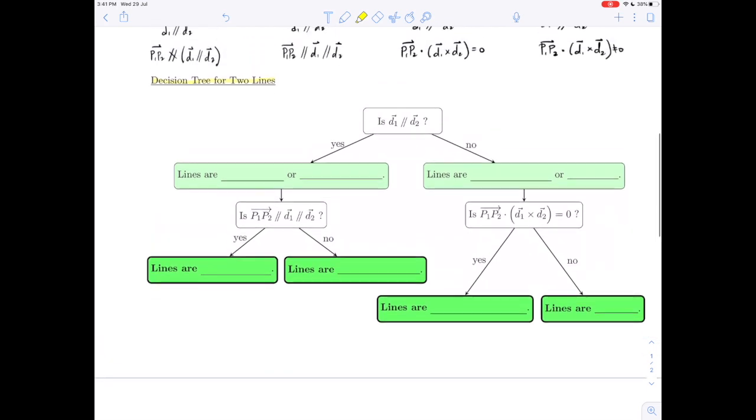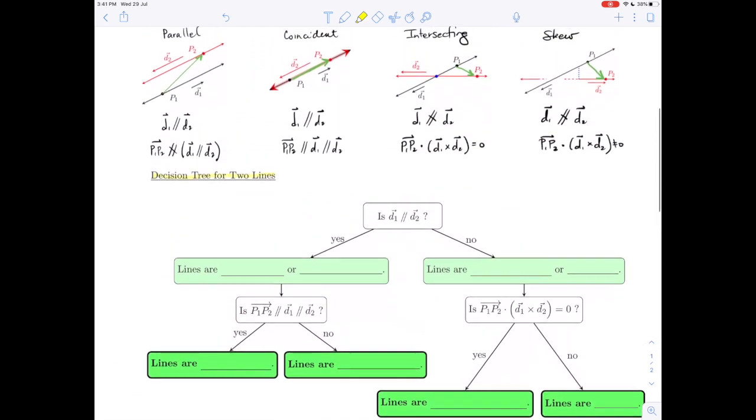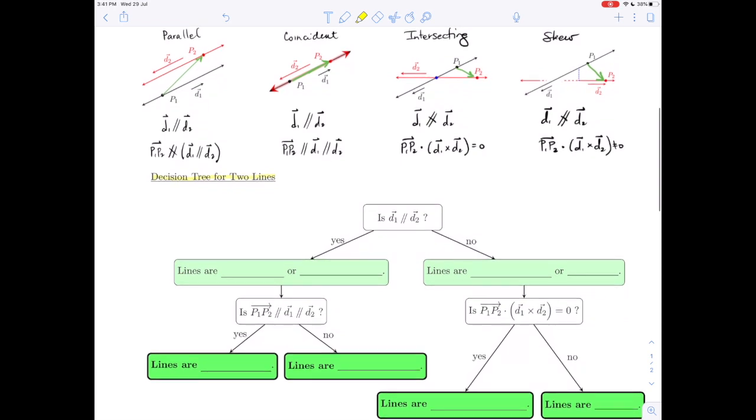So if we take a look at the images that we had for the four different cases, the first thing we asked ourselves was, is the direction vector d1 parallel to the direction vector of the second line, d2?